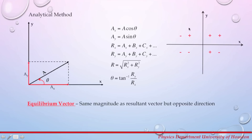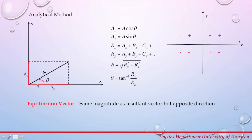Once you remember the quadrant rules, you can always find the appropriate direction for your resultant vector. The equilibrium vector is a vector that has the same magnitude as the resultant but is in the opposite direction, producing equilibrium. For example, if vector A is 5 cm long at 45 degrees from the positive x-axis, the equilibrium vector will also be 5 cm long, at 45 plus 180 equals 225 degrees from the positive x-axis.